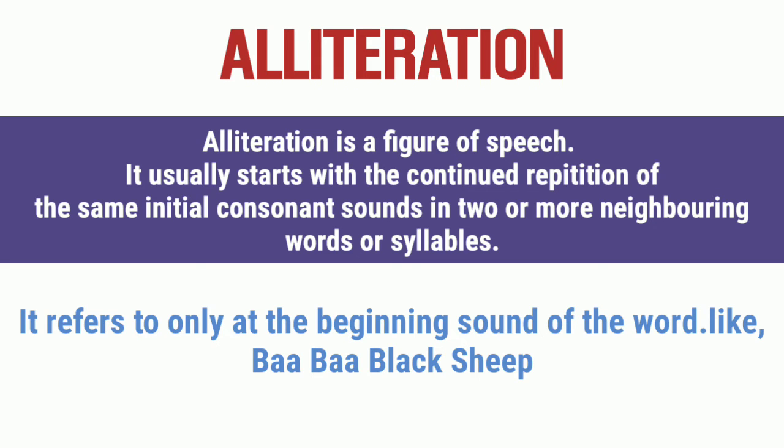Alliteration kya hota hai — jab hum apne group of words mein, ya phrase mein, ya sentence ke andar jitne bhi group of words honge, us ka pehla letter, us ka sound — baar baar same nikalta rahe. Do words mein bhi ho sakta hai, jaise 'Ba Ba Black Sheep' — 'Ba' ka sound do baar aaya. Consonant ka letter koi bhi ho sakta hai but us ka sound same hona chahiye.